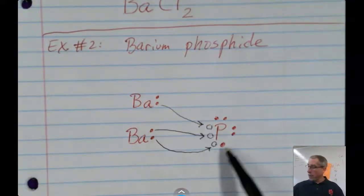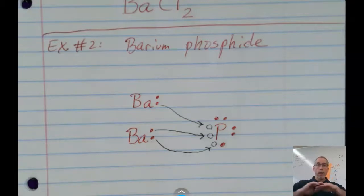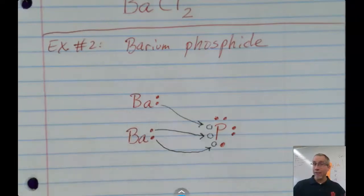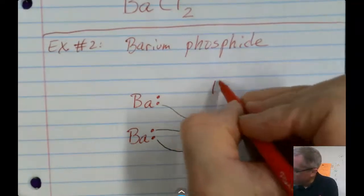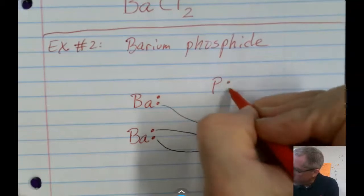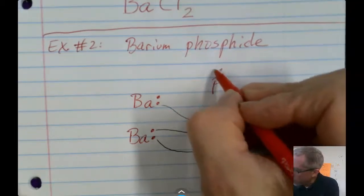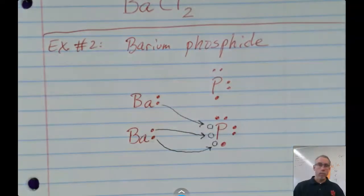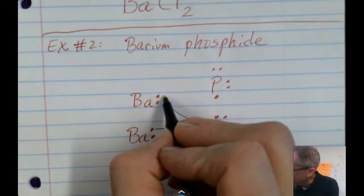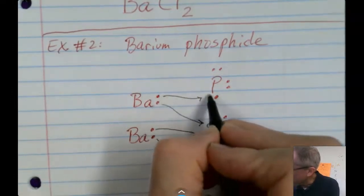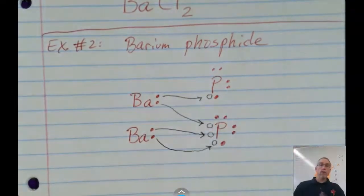So we can draw another barium with its two outer electrons and then show that one of those electrons can complete phosphorus's outer energy level. So now if you look, we got eight around phosphorus. So it's like, I'm good to go and I'm done taking any more electrons. However, we've got this barium that's only half happy because it still has another electron to give away. See what we're going to do here? We're going to draw another phosphorus with its five outer electrons.